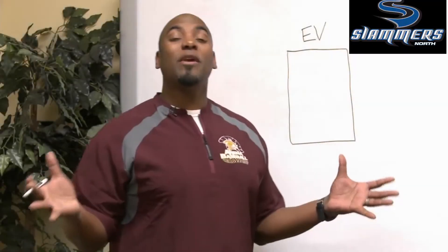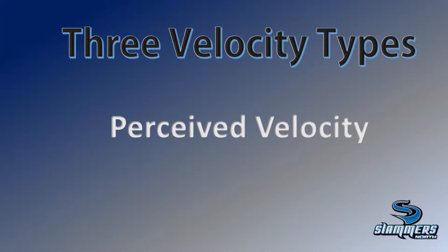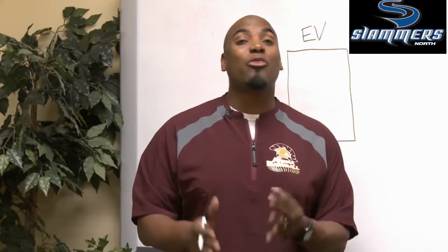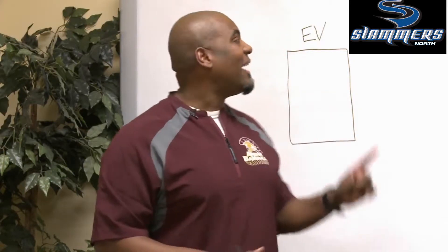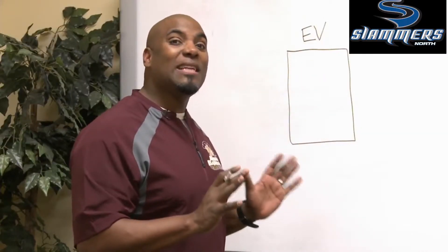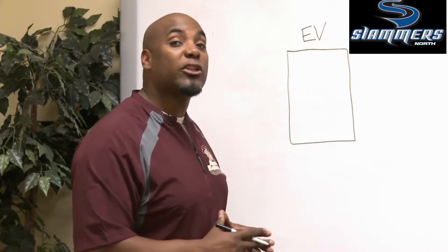We have three types of velocities. We have actual velocity, which is what the radar gun actually says. We have perceived velocity, based on where the pitch is actually released — every foot we're closer to home plate creates a three-mile-per-hour illusion for the hitter. And we're going to talk about effective velocity, EV, created by Perry Husbands. Effective velocity simply states that the velocity of the pitch is based on its location alone.